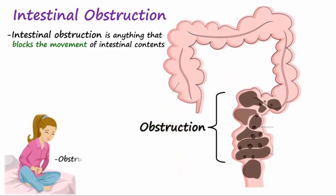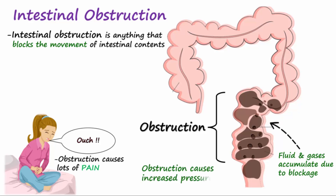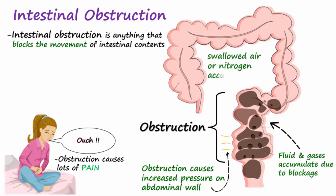The obstruction can cause a lot of pain in the area. Fluid and gases accumulate proximal to the obstruction, and this puts a lot of pressure on the wall of the intestine, causing distension. The accumulating gases are mainly composed of swallowed air or nitrogen, because nitrogen is poorly absorbed from the intestinal lumen.